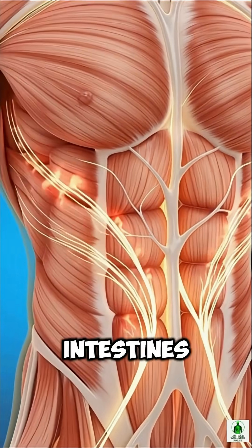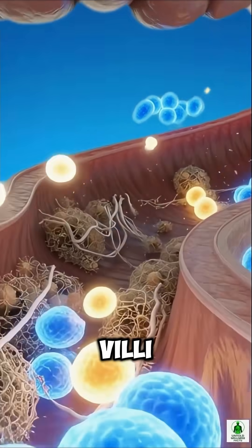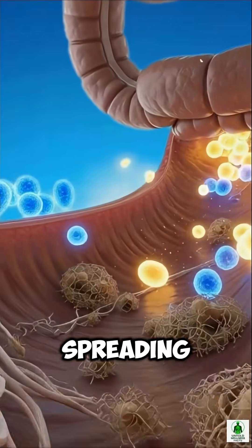Inside your intestines, golden nutrient particles move through microscopic villi, entering the blood and spreading throughout your body.